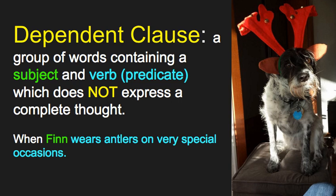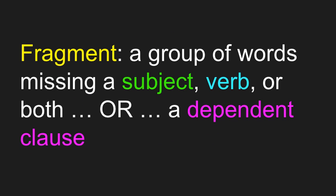A dependent clause is a group of words that contains a subject and a verb, but it doesn't express a complete thought. Notice if I add one word — 'when' — to that group of words, it can no longer stand on its own: 'When Finn wears antlers on very special occasions.' You want to know more; we need more in that sentence to understand it. So that's our first type of fragment: a fragment can be a dependent clause.